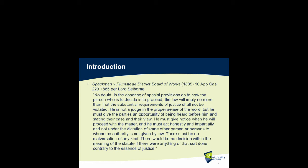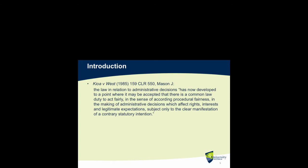In Kiowa v West, Justice Mason said that the law in relation to administrative decisions has now developed to a point where it may be accepted that there is a common law duty to act fairly — in the sense of according procedural fairness — in the making of administrative decisions which affect rights, interests, and legitimate expectations, subject only to the clear manifestation of a contrary statutory interpretation.